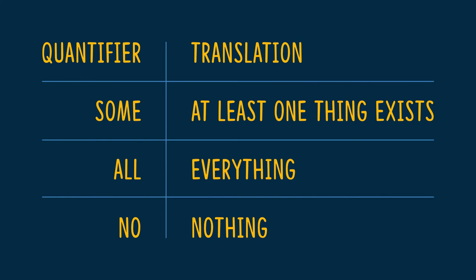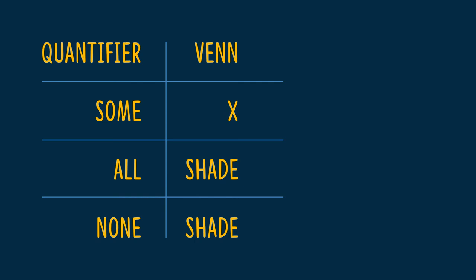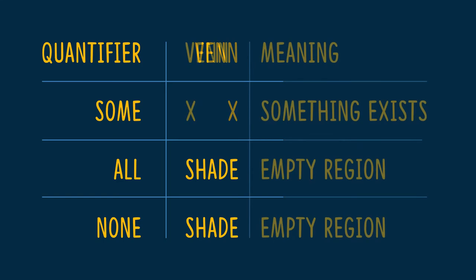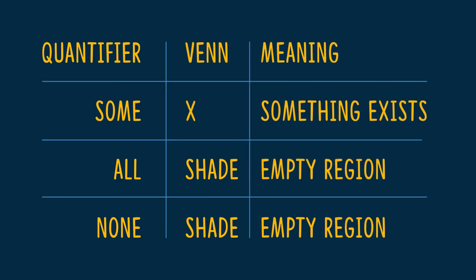First, let's get a table for how to translate quantity. For some, think of it as at least one thing exists that. For all, just say everything. For no, say nothing. With some, because it's a particular claim, there will be an X. With all or no, those are universal claims, and so something will be shaded. Remember, X shows that something exists in that region. Shading says that that region is empty — that there's nothing there.